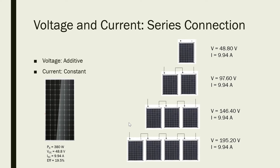As we have seen here, as we add more solar panels in series, the voltage is additive, and the current would still be the same — it is constant, it never changes.